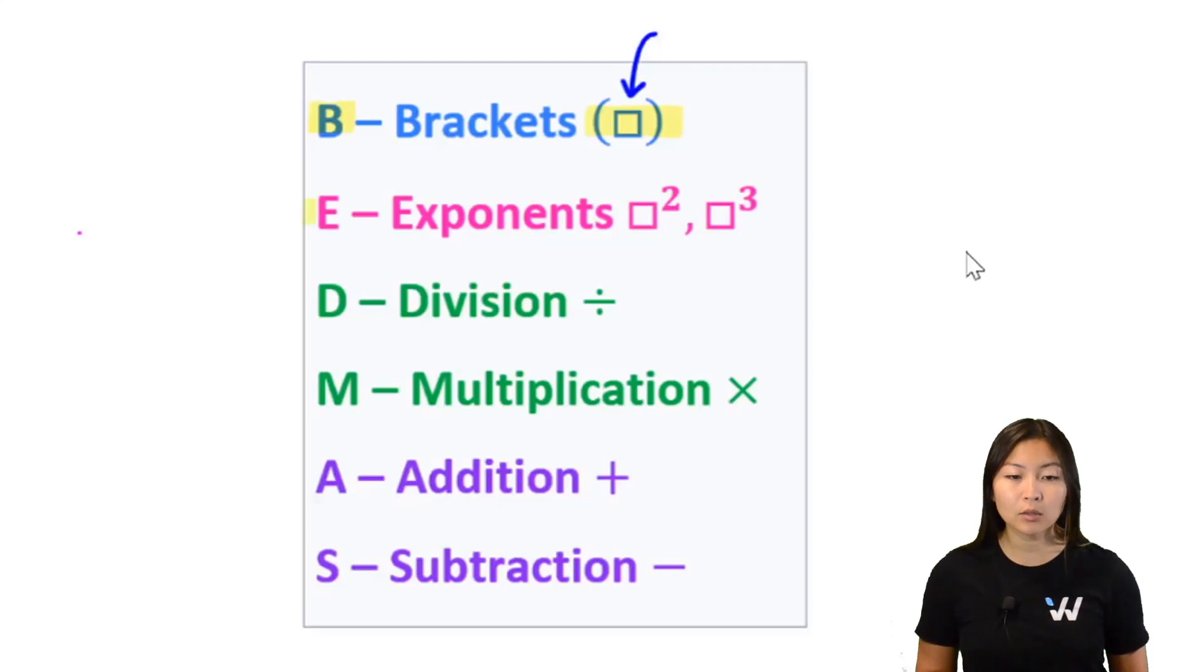Once we're done with brackets, we're going to look at exponents. That's what E stands for. So these are your powers, so 2 to the power of 2, 4 to the power of 3. Now one thing that they don't really tell you often is that exponents also include square roots. So if you see a square root, you'll also deal with it in this E step.